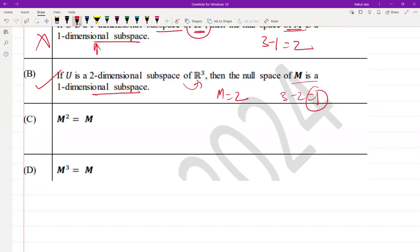Option C is M² = M. So this is the defining property of a projection matrix by default. So for any projection matrix M, M² = M. So that is the idempotence property we call it. Right, so due to which it is true.